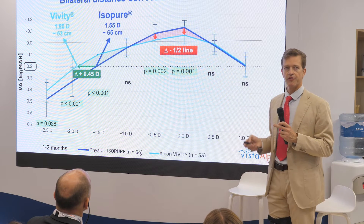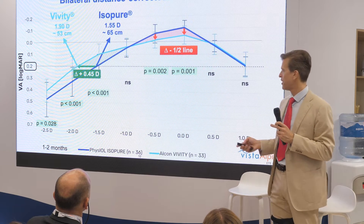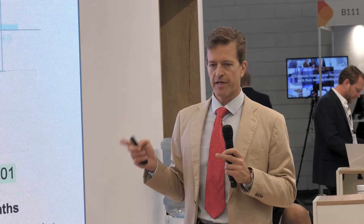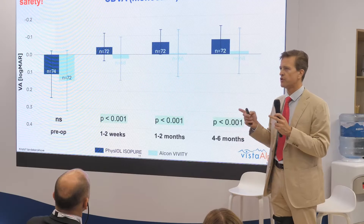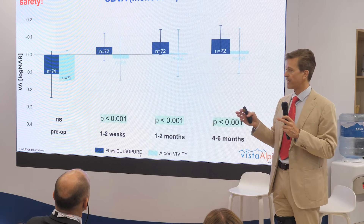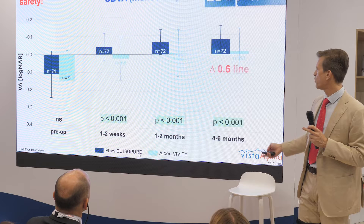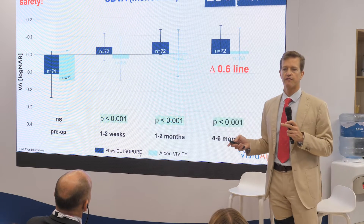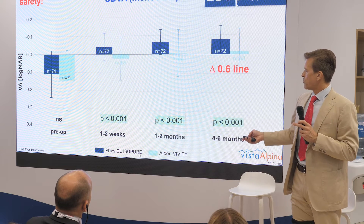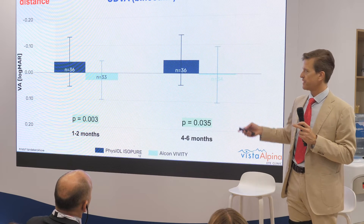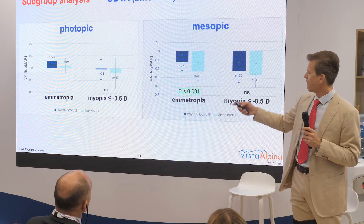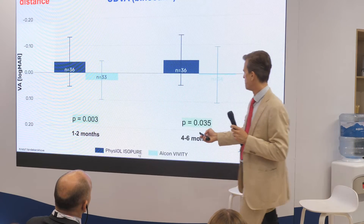This comes at the cost of visual acuity around emmetropic values. For best-corrected visual acuity — always the most important parameter — you don't want any refractive solution to reduce your BCVA. From week one onward there is a difference in favor of isopure, and at six months we have a little more than half a line advantage for isopure. For binocular distance visual acuity, the same picture: isopure gains half a line over vivity photopically, becoming even a full line under mesopic conditions.